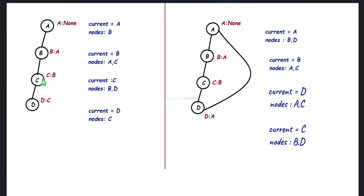Let's take an example. Here we have a graph — you can see there is no cycle in this graph. This is a simple graph which contains 4 nodes: a, b, c, d. I will take a as my starting node. So the parent node of a is none, parent node of b is a, parent node of c is b, parent node of d is c. First we need to insert a into the queue, and its adjacent node is b.